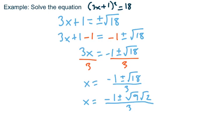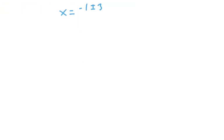x is equal to negative one plus or minus, so that plus or minus is important, 3, the square root of 9, principal square root of 9 is 3. Negative 1 plus or minus 3 times the principal square root of 2 over 3.